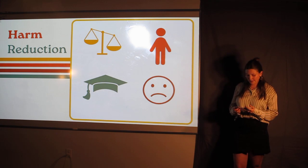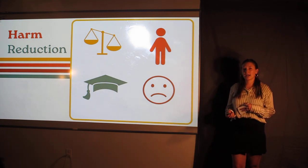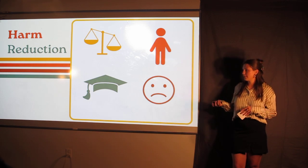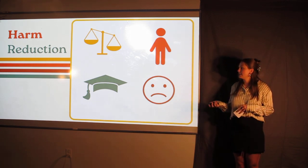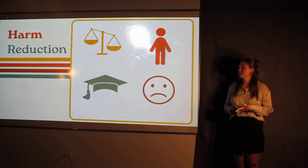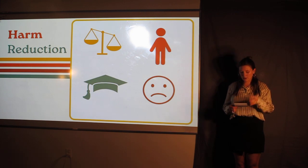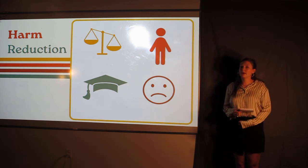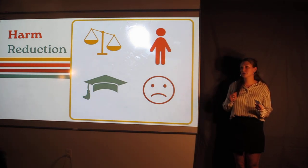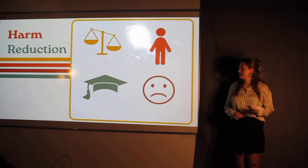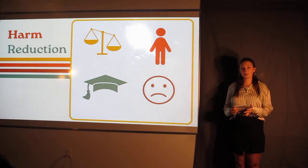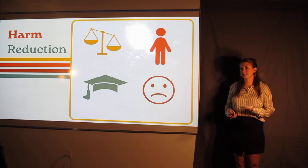The next harm area is academic harms, which can look like being suspended, expelled, or put on probation from a sport you play. One way to mitigate this harm is by not using drugs at school or on campus. Finally, the last harm area is social and emotional harms, which can look like developing depression, anxiety, or becoming isolated from your peers. One way to mitigate this is by having trusted adults, peers, and friends you can turn to if you are struggling with addiction or drug use.